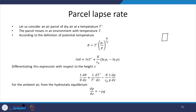Let us consider an air parcel. So far, we have considered an air parcel which is at the same pressure as the surroundings and the temperature can be anything. The change in the temperature will only decide whether the air parcel is going to rise or sink. Let us consider the parcel of dry air at a temperature T prime — the temperature inside is T prime — and the parcel moves in an environment with a temperature T, so the temperature outside is T.